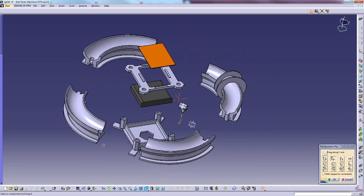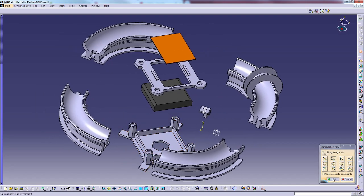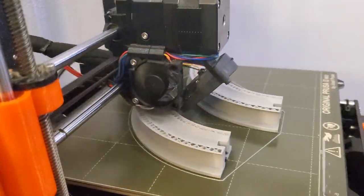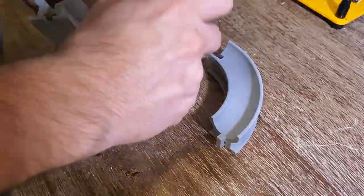So this is an exploded view of all the pieces that go into the assembly. It took a little over 24 hours to produce all the pieces of the ring accelerator.